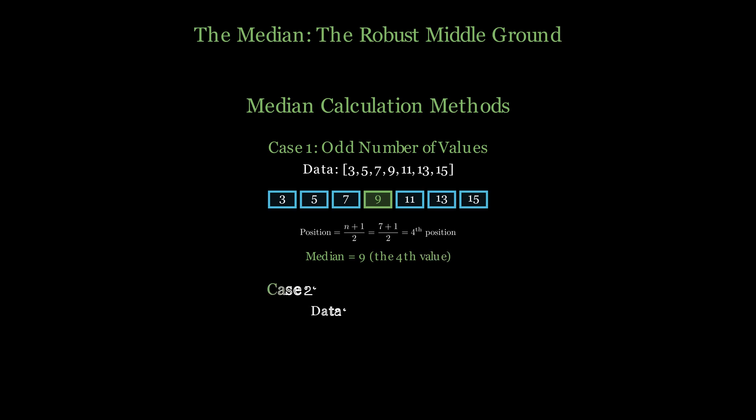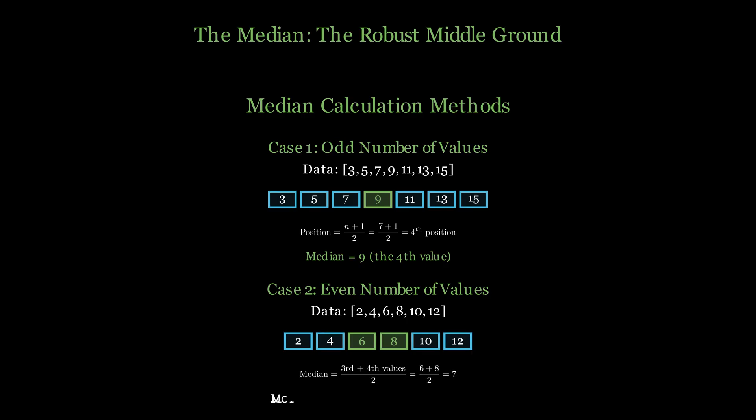For even numbers of values, like these six data points, we don't have a single middle value. Instead, we take the average of the two middle values—the third and fourth positions. 6 plus 8 divided by 2 equals 7. Notice something interesting: our median of 7 doesn't even exist in our original data set. This is perfectly normal and shows how the median can represent a theoretical middle point between actual data values.